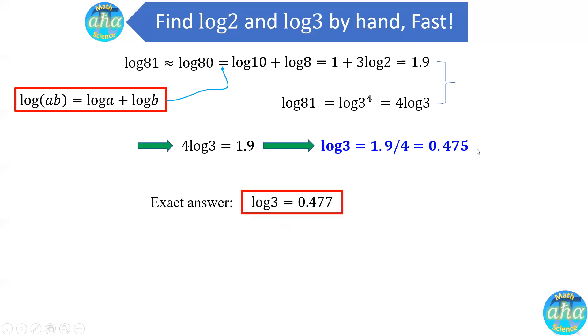So what is the exact answer of log of 3? Log of 3 is actually equal to 0.477. Again, our answer is very close to the exact answer. And the difference is only 0.002.